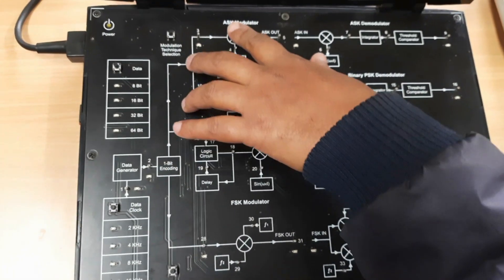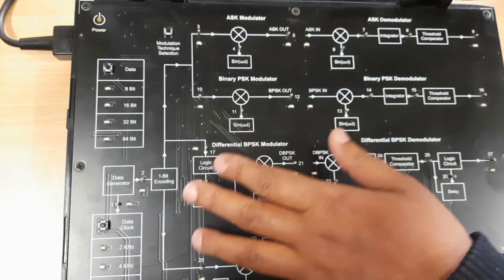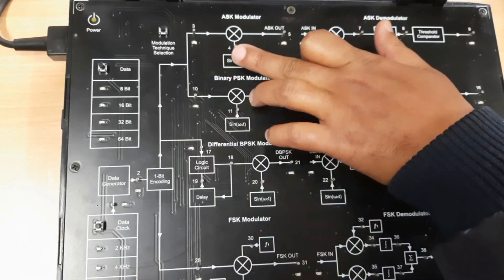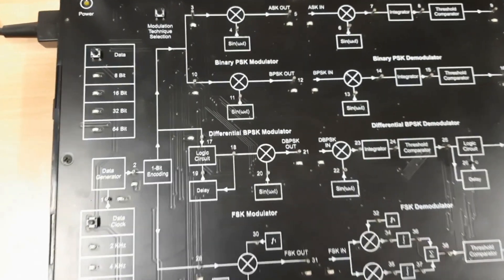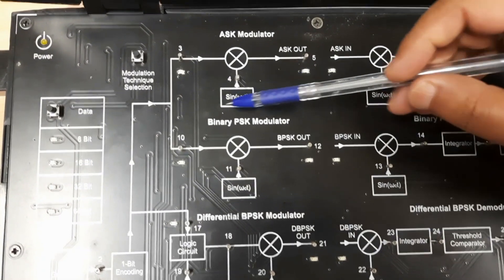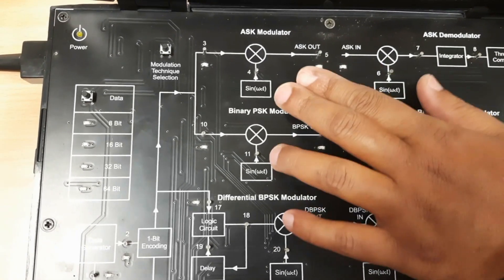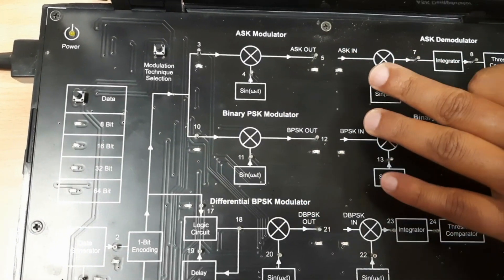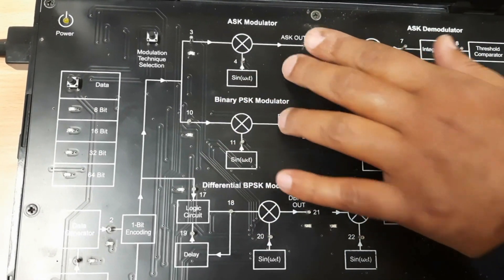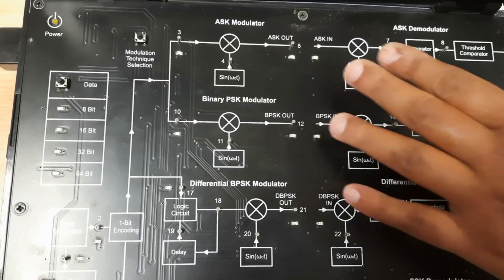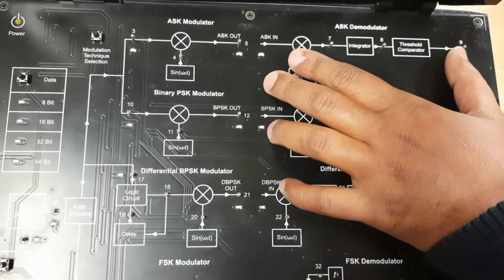Next, a multiplier is provided. Whatever the output of the bit encoding block, it is multiplied with the carrier signal sin(ωc·t). After multiplication of these two signals, the output obtained is the ASK modulator waveform. This is the process for modulation.